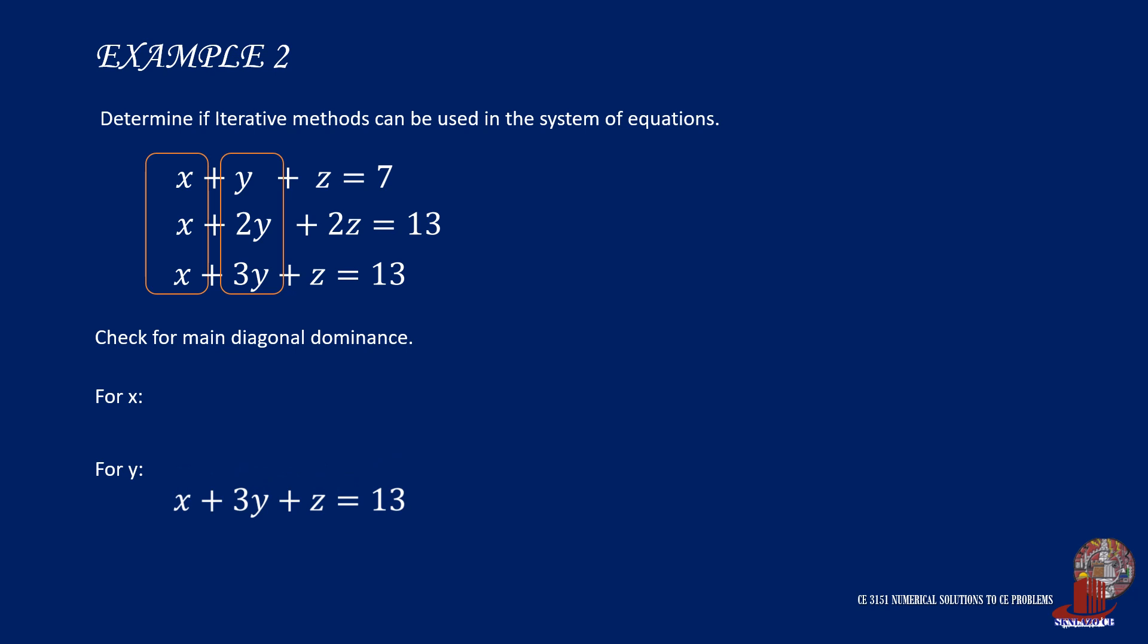Then move to variable z. We can take 2z as the dominant term, so x + 2y + 2z = 13 is the equation for z. And this leaves x + y + z = 7 as the equation for x.